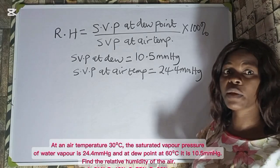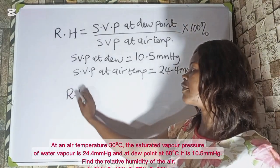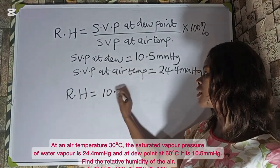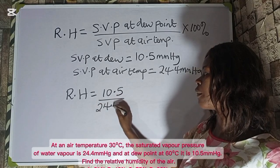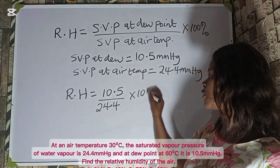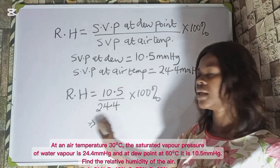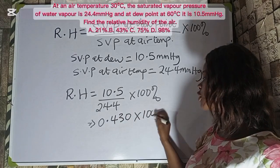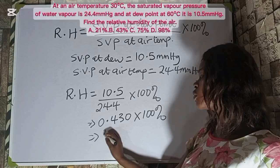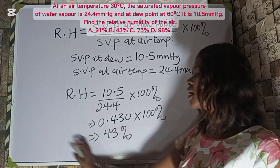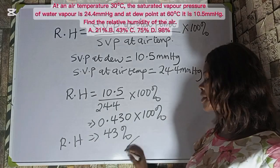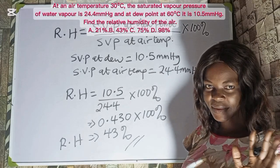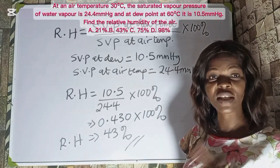Substituting: RH = 10.5 ÷ 24.4 × 100% = 0.430 × 100% = 43%. So the relative humidity is 43%. If you see a question like this or something similar, this is how to solve it. The correct option to this question is option B.